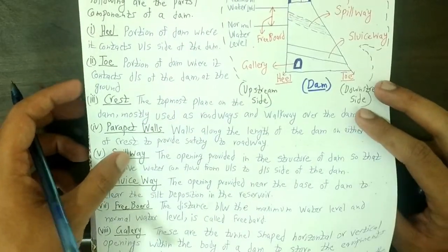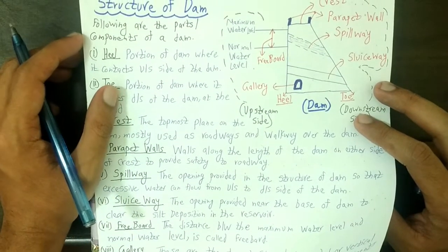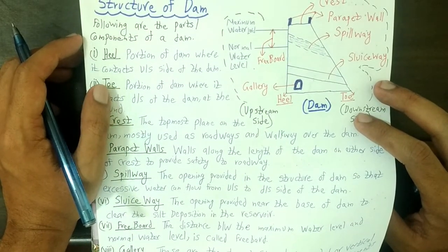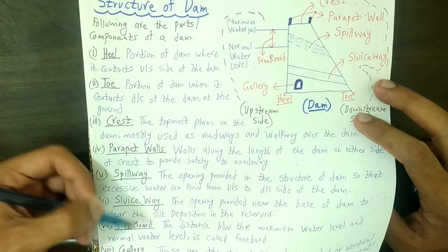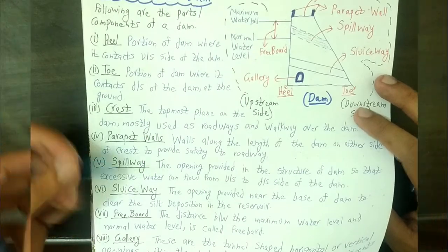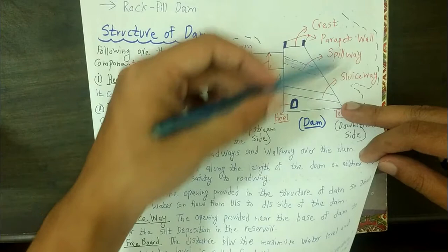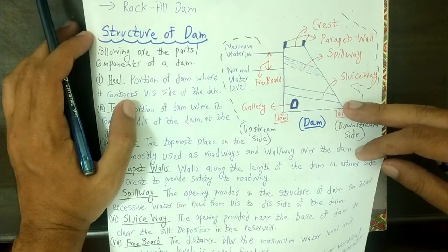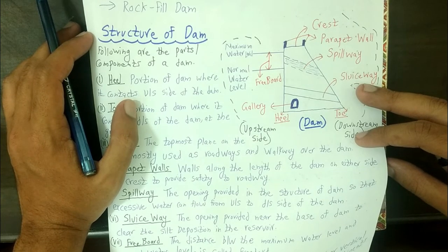So basically all these are the important and basic components of the structure of the dam. We have studied heel, toe, crest, parapet walls, spillway, sluiceway, freeboard, gallery, and abutment. All the components are labeled in the diagram. Hope you guys liked this video and understood the concept of the components of the dam. If you liked this video, subscribe to my channel and hit the like button. We will meet in the next video.